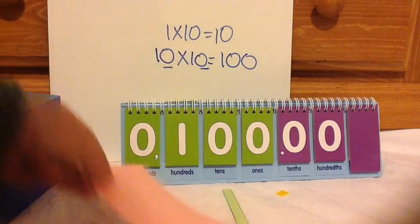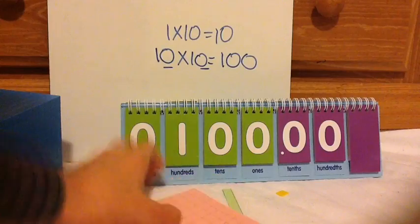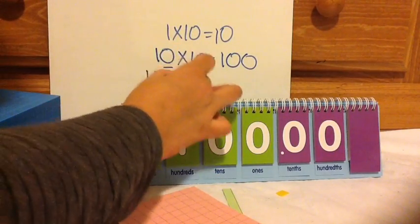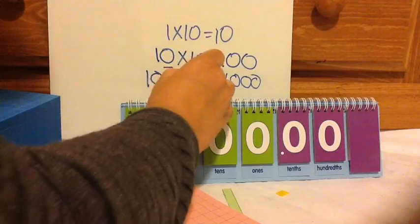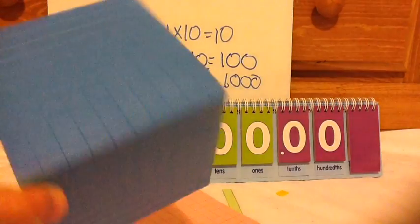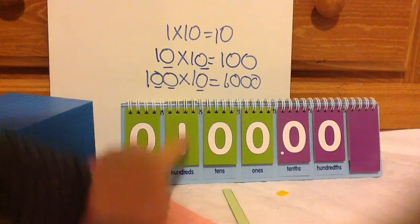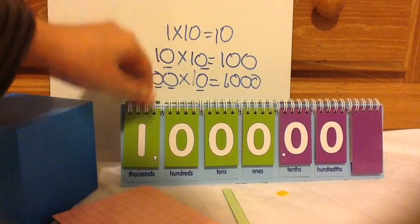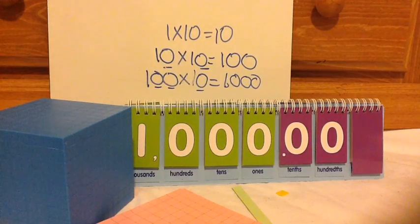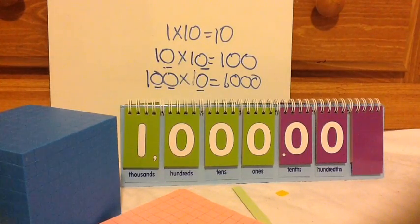Same thing — if I have a 100s block and I have 10 of them, what do I get? I get 1,000, counting my zeros — three zeros in my answer. So then I get one of these. So: 1 times 10 is 10. 10 times 10 is 100. 100 times 10 is 1,000. And then even though I don't have the blocks for it: 10,000 times 10 equals 100,000. 100,000 times 10 equals 1,000,000. It just keeps going — times 10, times 10, times 10.